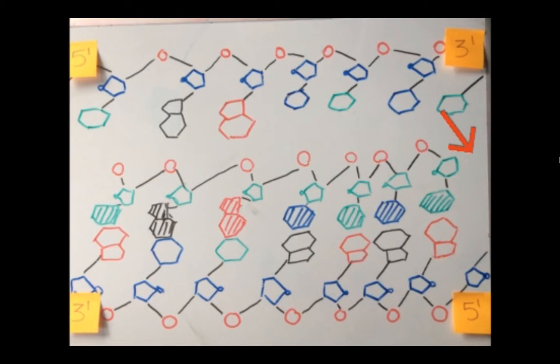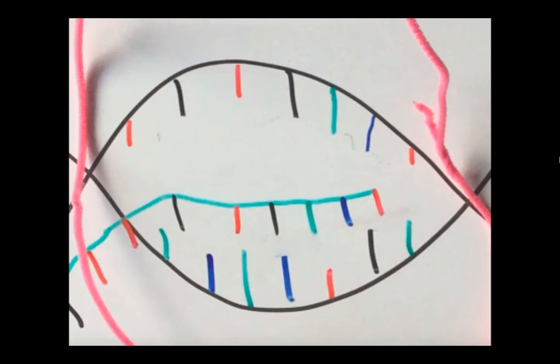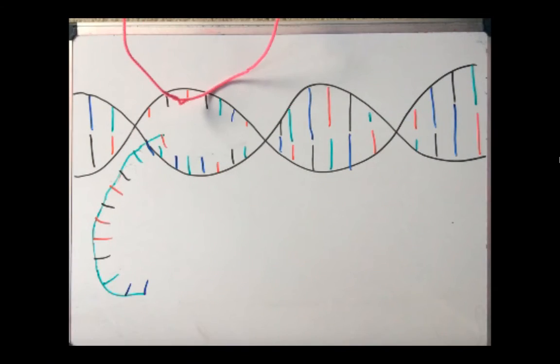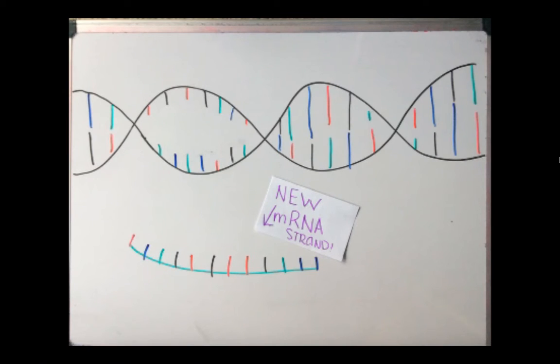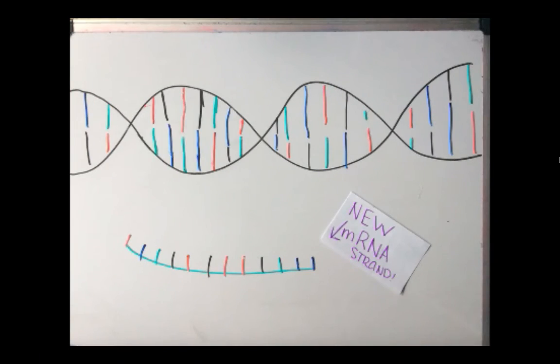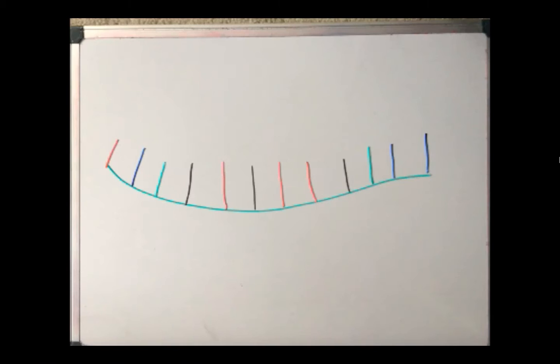A single strand of RNA is the result as the RNA polymerase moves from 3' to 5' along the template strand. A completed strand of RNA is known as messenger RNA, or mRNA.